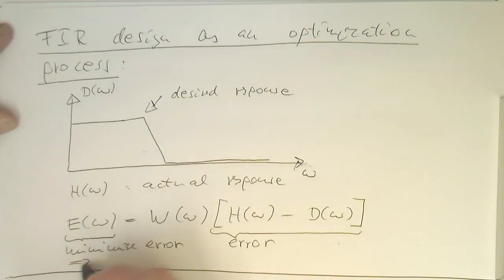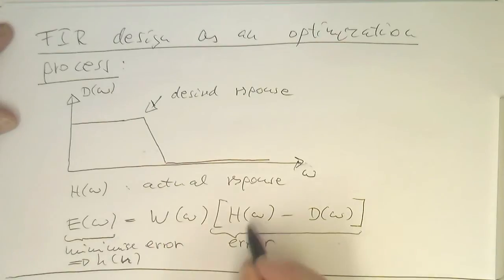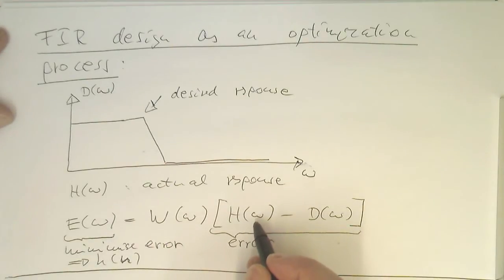And then the result out of this is our h of n, the coefficients of this h of omega here.